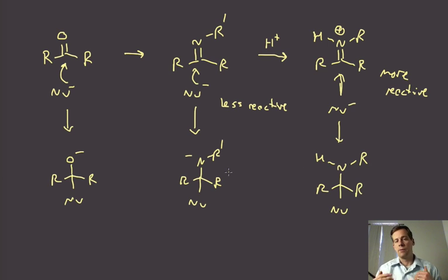So rather than forming any anion, you go from a cation to a neutral species. That is obviously going to be a lot more favorable. So iminium ions here are the most reactive.